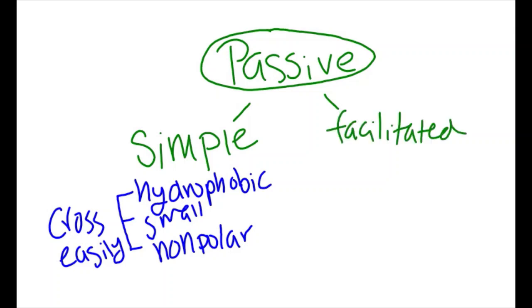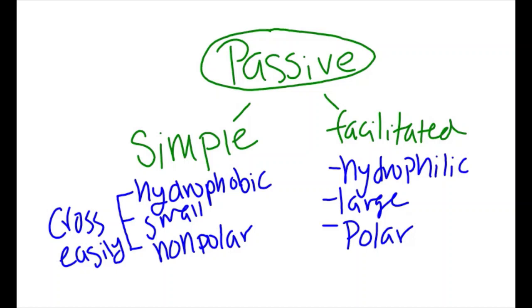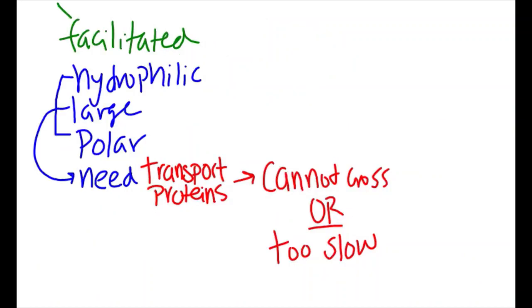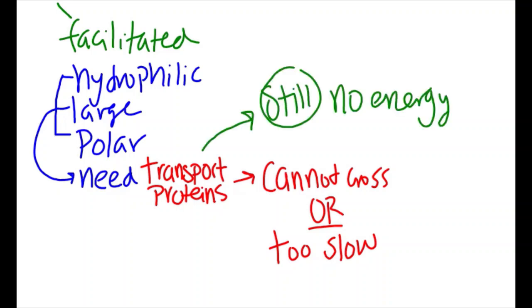But if we take the opposite of such diffusion, namely facilitated diffusion, we get into a problem. Facilitated diffusion is the transport of large hydrophilic, polar molecules. And these require the help of specific transport proteins in the cell membrane. Without these transport proteins, the substance cannot cross the membrane, or it diffuses across too slowly to be useful. Even though facilitated diffusion needs such a protein, it still doesn't require energy, since the driving force of the movement is still the concentration gradient.